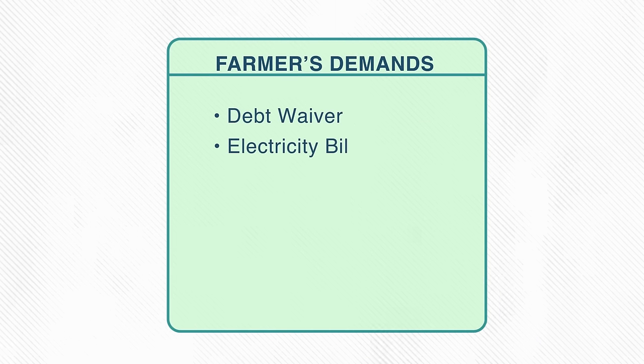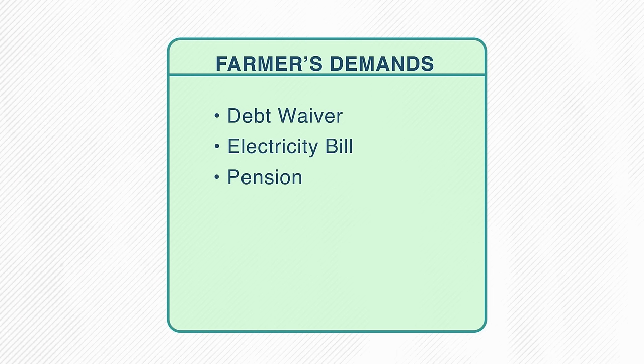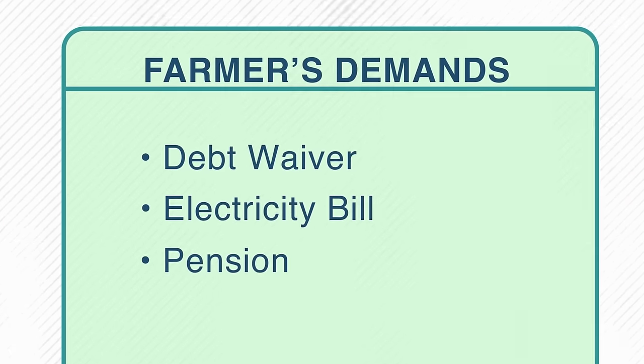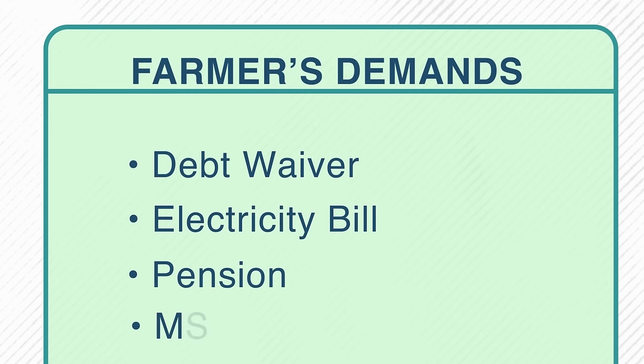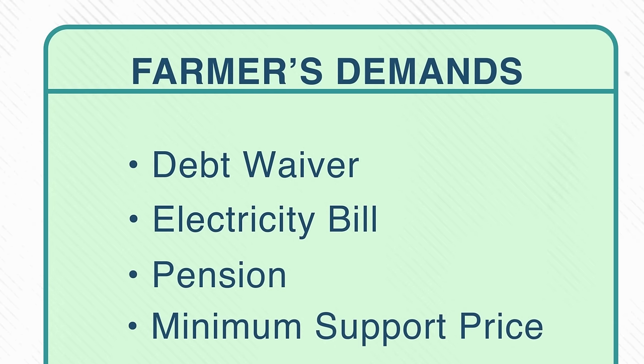Let's start with the first question: why are the farmers protesting and what exactly are their demands? The farmers have a lot of demands, from debt waiver to electricity bill to even pensions. But the most important and critical demand of all is the demand for something called the MSP, or minimum support price.